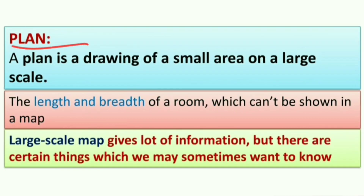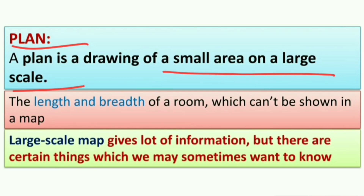What is meant by a plan? A drawing of a small area on a large scale is called a plan. In simple terms, representing a small area on a large scale is called a plan. For example, if we have to construct a house, the plan shows where each room should be, where the kitchen should be, and so on. Everything is mentioned in the plan. Large scale maps give a lot of information.